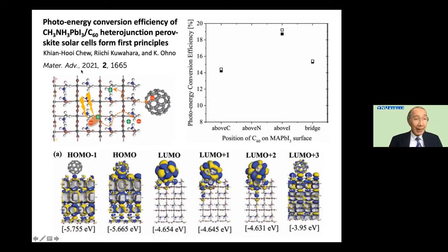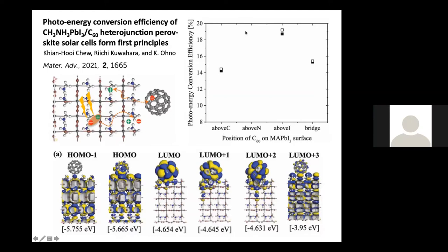C60 is placed on top of the perovskite surface, and we obtain the resulting Kohn-Sham orbitals and energy levels. From this information, we succeeded in obtaining photo energy conversion efficiency as a function of adsorption site. According to our calculation, among many possible adsorption sites, above the iodine site the top energy conversion efficiency is almost 19% or more.